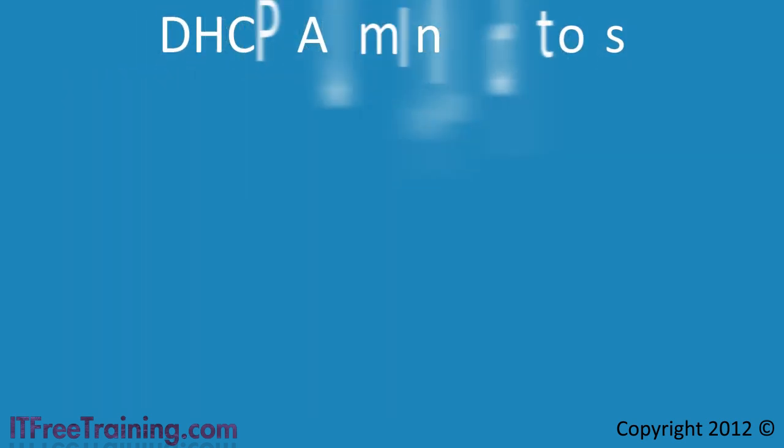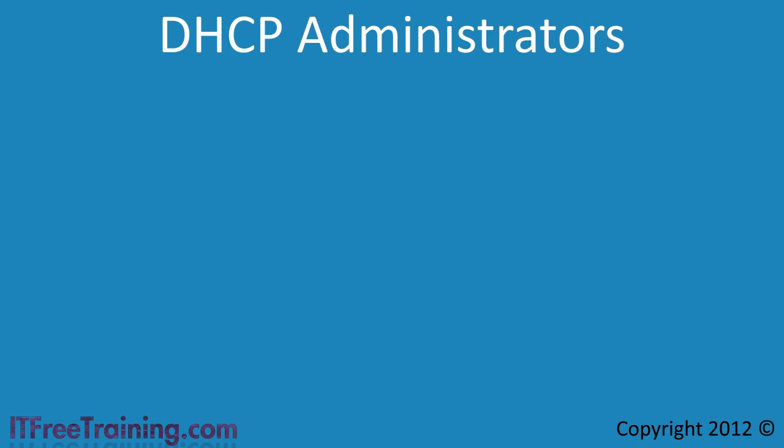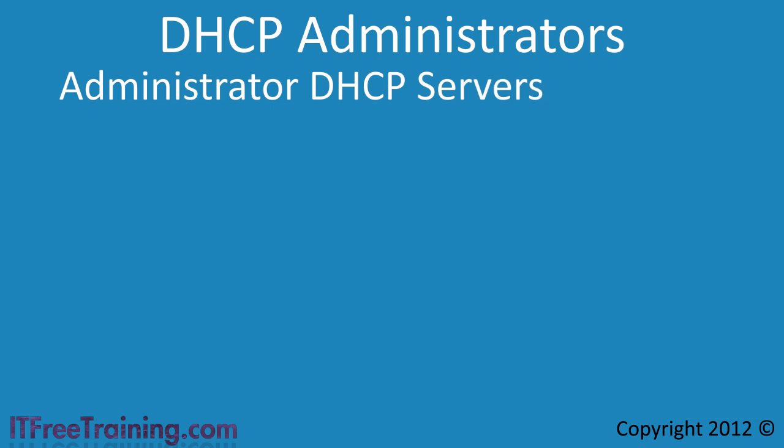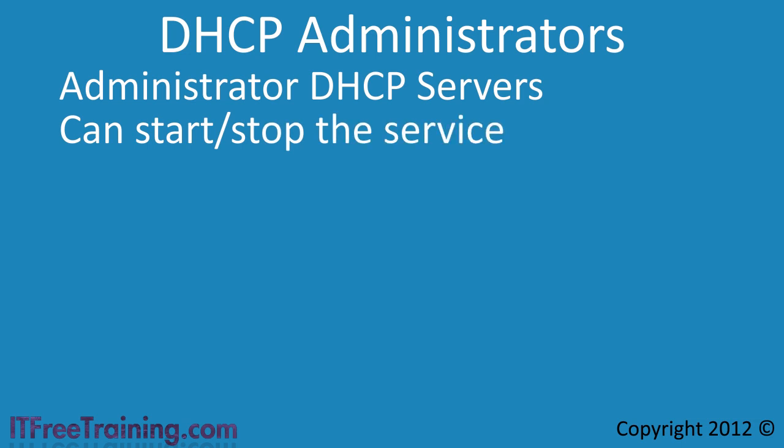The next group is DHCP Administrators. If any of the DHCP groups have not been created, they will be created when DHCP is first installed. Users of this group can administer DHCP servers, including creating new records and zones and all aspects of DHCP administration such as stopping and starting the DHCP service. Membership of this group does not give any other access to the server — for example, if DNS were installed on the same server, being a member of this group would not give you access to the DNS server.